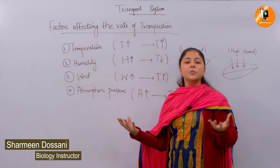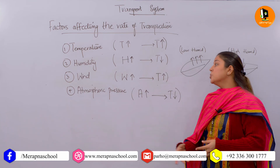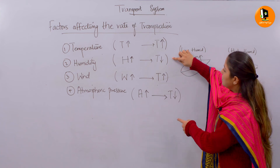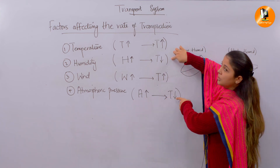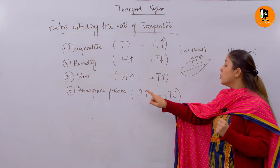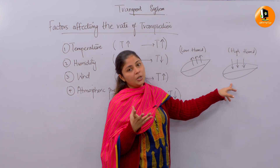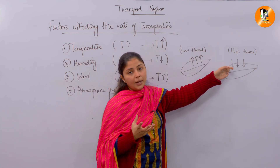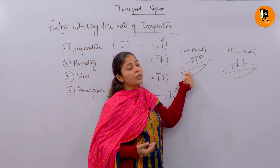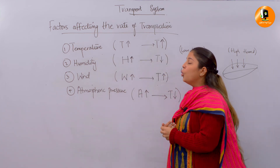The fourth important factor is atmospheric pressure. When in the atmosphere there are more gases and more water molecules, it provides pressure to the leaf structure. Atmospheric pressure and transpiration rate are inversely proportional, similar to humidity. High atmospheric pressure means less transpiration rate; low atmospheric pressure means high transpiration rate, because water molecules move from higher concentration to lower concentration, along the concentration gradient.